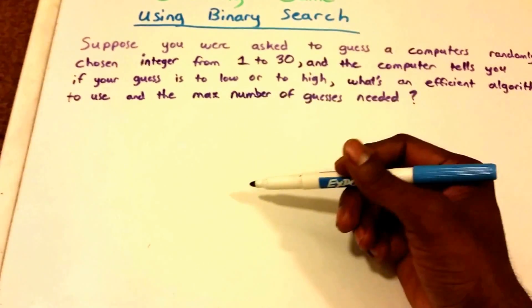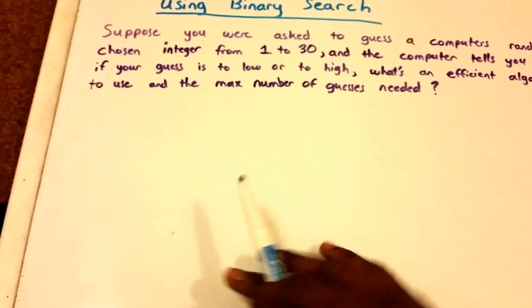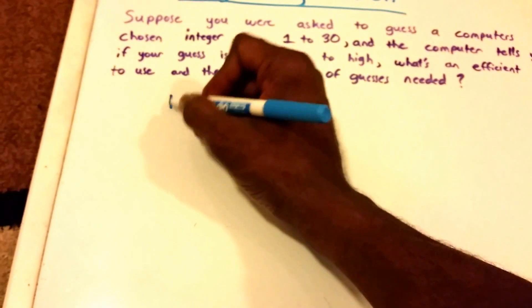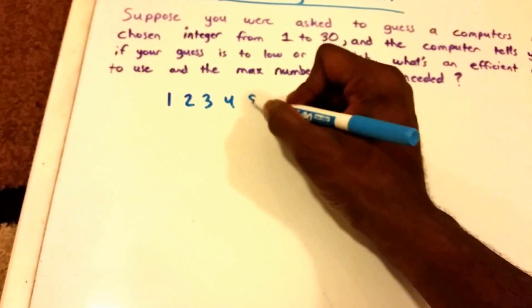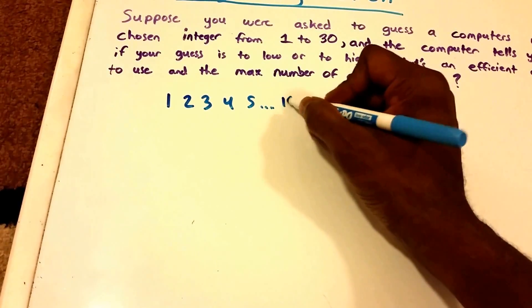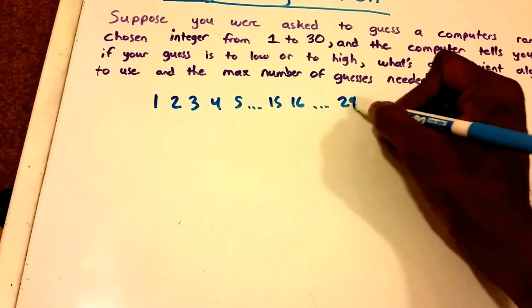Well, obviously by the title, it's going to be binary search, but let's look at this for a second. So if we were guessing a number from 1 to 30, so we have 1, 2, 3, 4, 5... I'm just going to go all the way up 15, 16, and then we have 29 and 30.